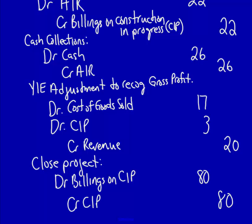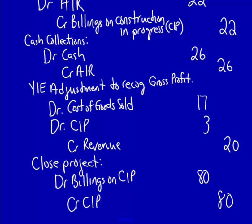Flowing through the T-accounts: debit billings on CIP $80, balance zero; credit CIP $80, balance zero. All the accounts we've been tracking for the last three years are now set at zero, which makes sense considering the project is finished.